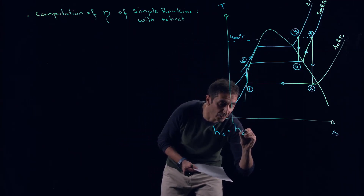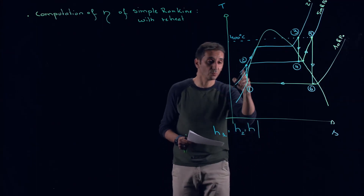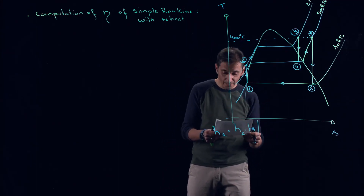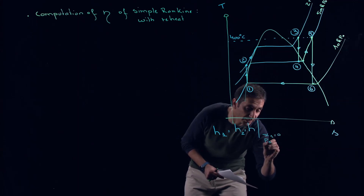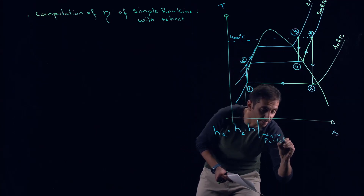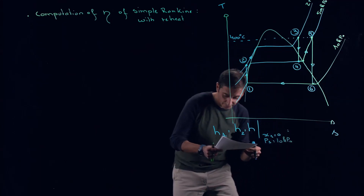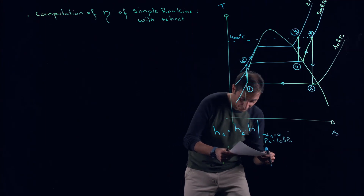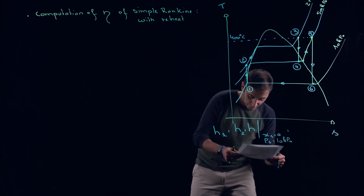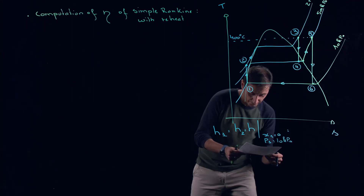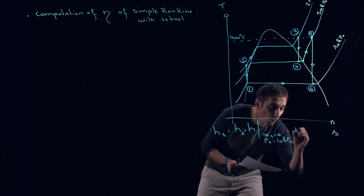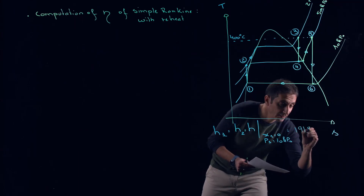The consequence is that H1 and H2 will be the same. H1 equals H2, evaluated at quality x₁ = 0 and P₁ = 10 kPa, giving an enthalpy of 191.8 kJ/kg.